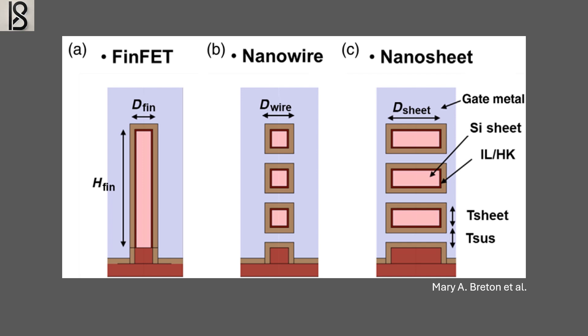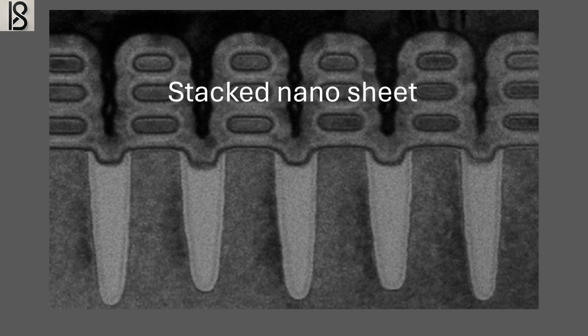For example, the smaller channels in nanowire provide their gates with greater control over electron flow. However, this increased control also restricts electron flow when the gate is open. This suggests that nanowires will likely need to be stacked. However, there is a limit to how high they can be stacked, as stacking them too high could disrupt the interconnect layers positioned above them.